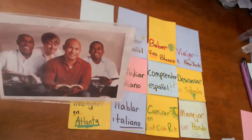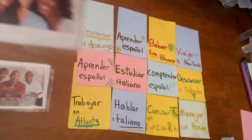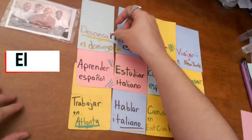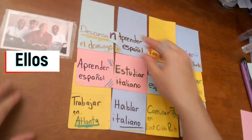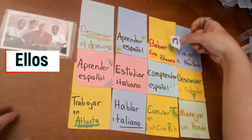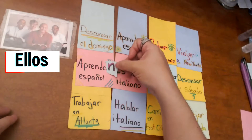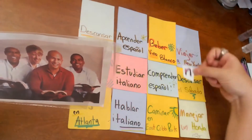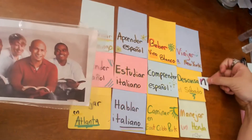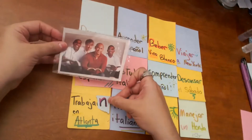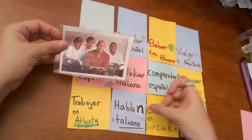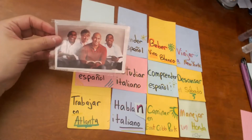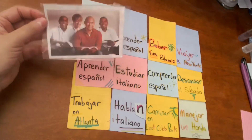Now we have 'ellos.' It doesn't matter if we have 'ellas' or 'ellos' — it's the same treatment. Ellos descansan, ellos aprenden, ellos beben, ellos viajan, ellos estudian, ellos comprenden, ellos descansan, ellos trabajan, ellos hablan, ellos caminan, ellos manejan. Make sure that N sound is there at the end — that's how we know the subject is plural.